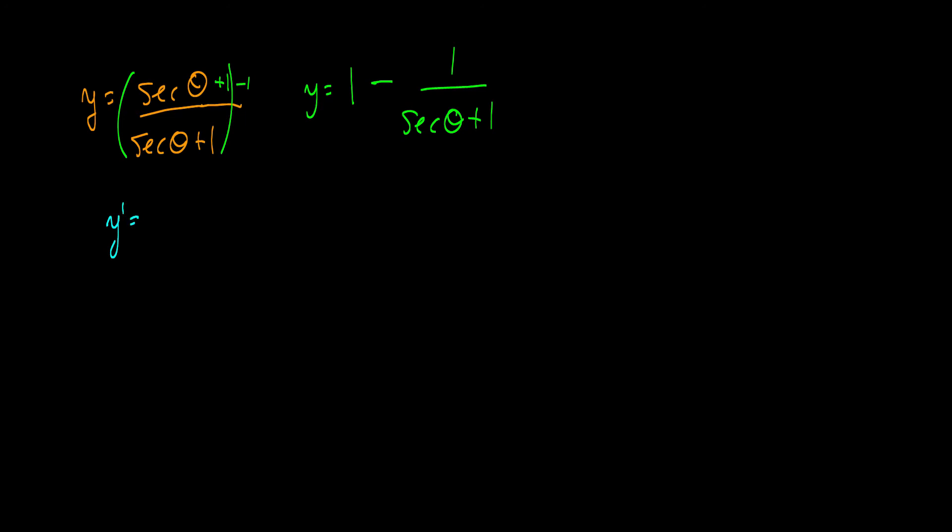Y prime is equal to, well, this term goes to 0, so this will be negative. Okay. F prime of x times g of x is 0 minus the derivative of secant theta is secant theta tan theta, and the derivative of 1 is 0, okay? And this is all over secant theta plus 1 all squared. So we don't even need to simplify this really. We just know that this is the same thing as negative secant theta tan theta over secant theta plus 1 all squared.